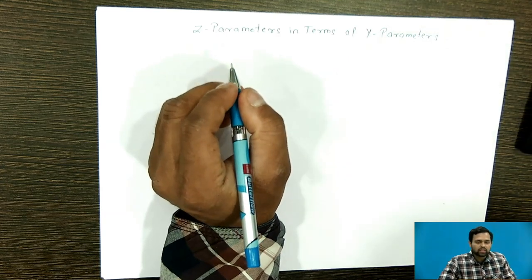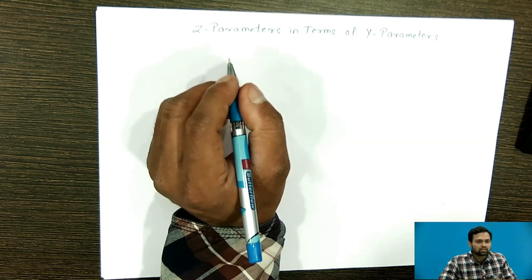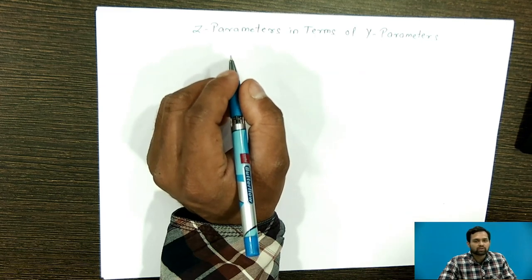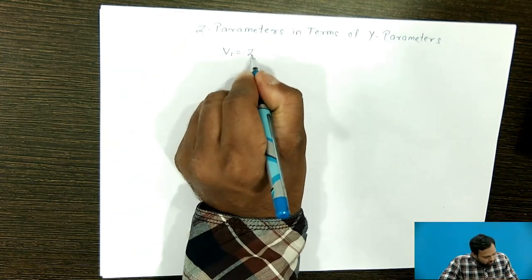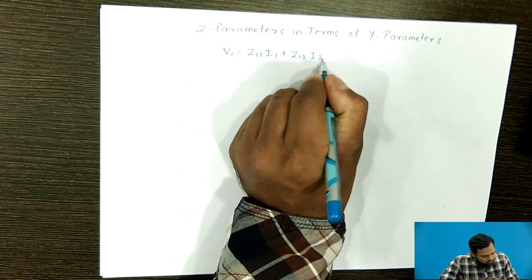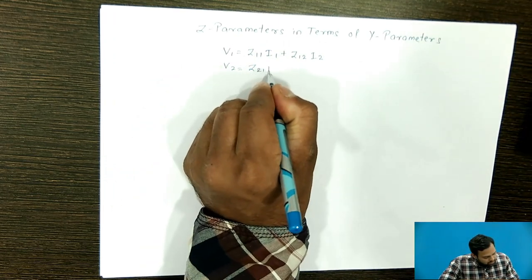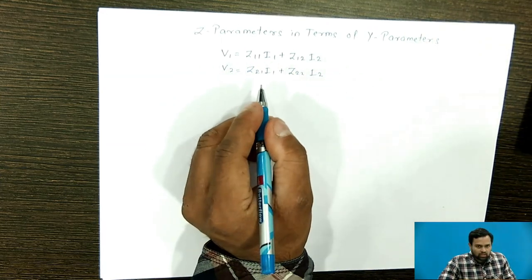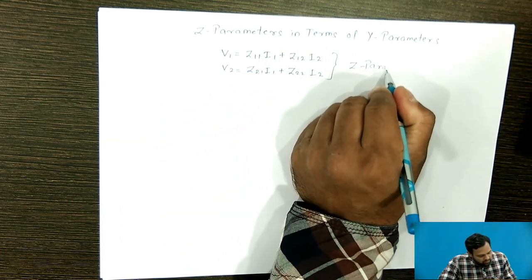In the case of Z parameters, the independent variables are currents I1 and I2, and the dependent variables are V1 and V2. The equations are: V1 = Z11·I1 + Z12·I2, and V2 = Z21·I1 + Z22·I2. These two equations are related to the Z parameter.